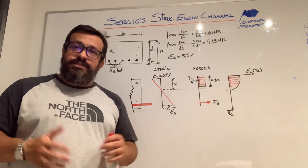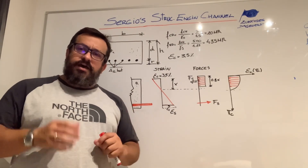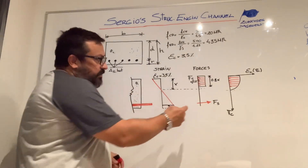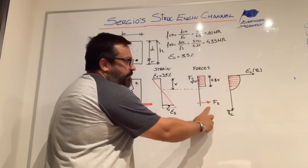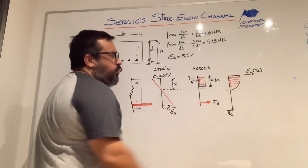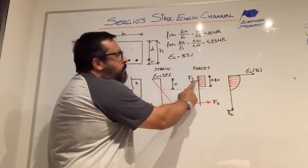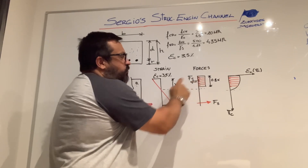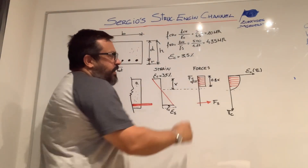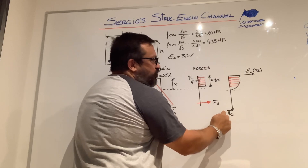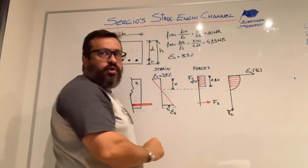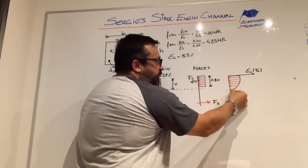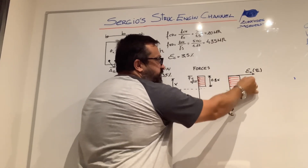Secondly, we have to establish the force balance at section level, as represented in this diagram. We get the tension capacity provided by the reinforcement, which we call FS, and also the compression force resultant provided by the concrete, which we call FC. Normally, the relationship between the stress and the strain of the concrete follows this curve and equation.